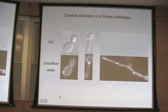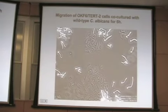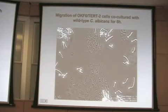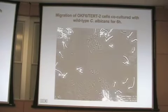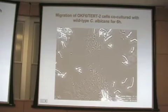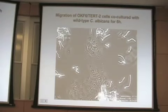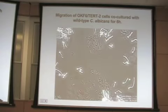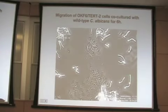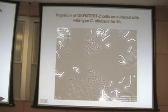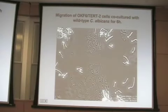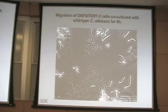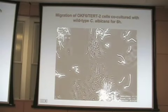When we added this fungus to our cultures, the migration of those human keratinocytes changed dramatically. The first thing to point out is that you can clearly see the fungus is growing — it forms nice hyphae — and that the cell sheet is migrating more synchronously, directed in one way. We don't know whether this is chemotaxis or not, but obviously something is going on with these cell cultures.